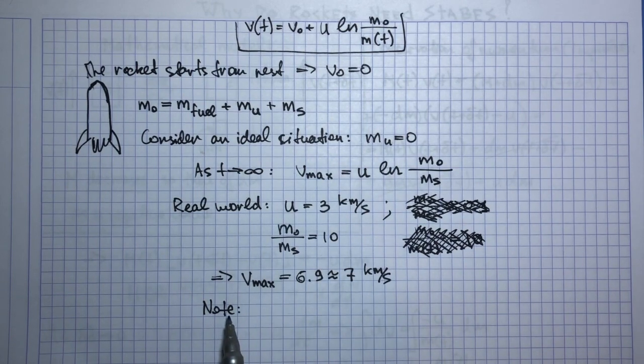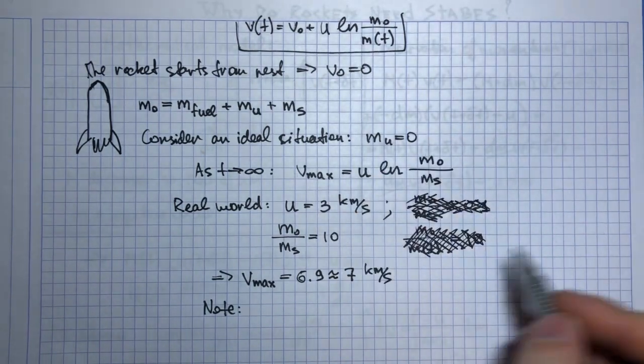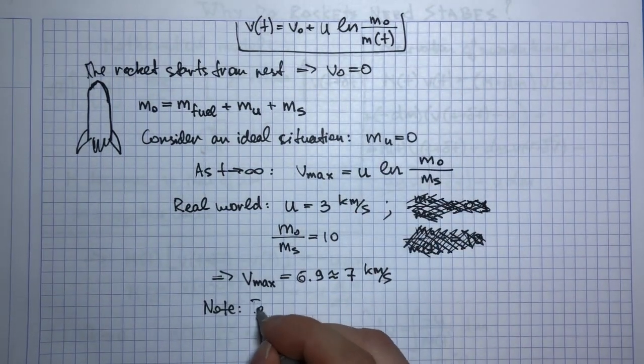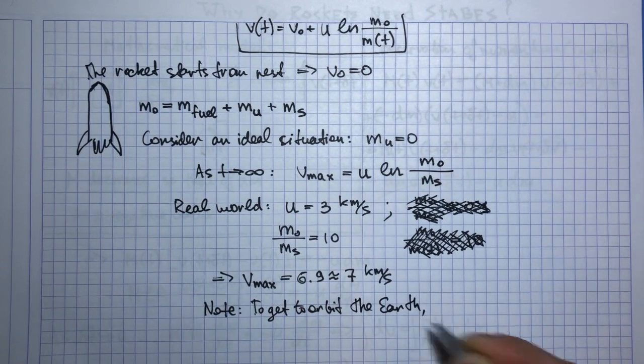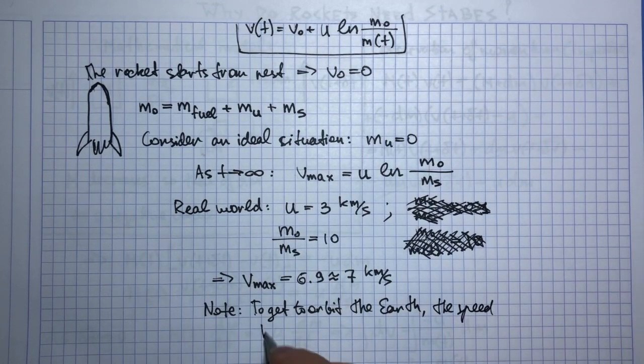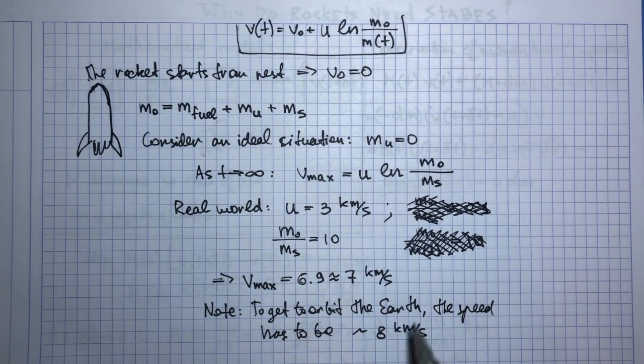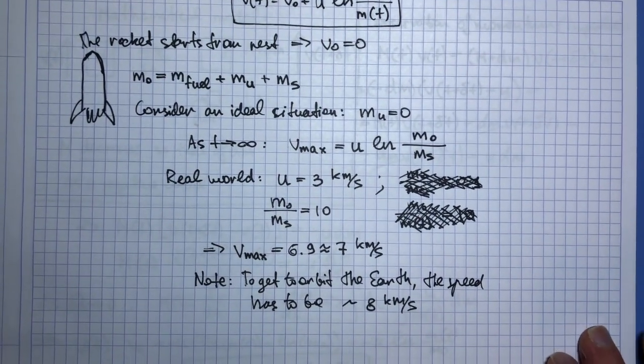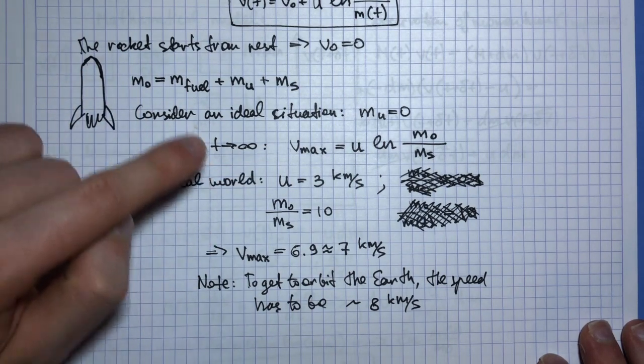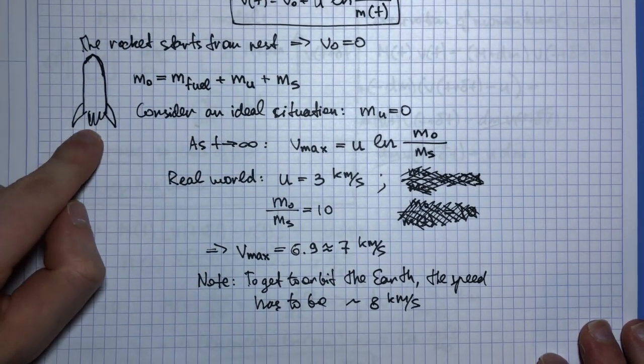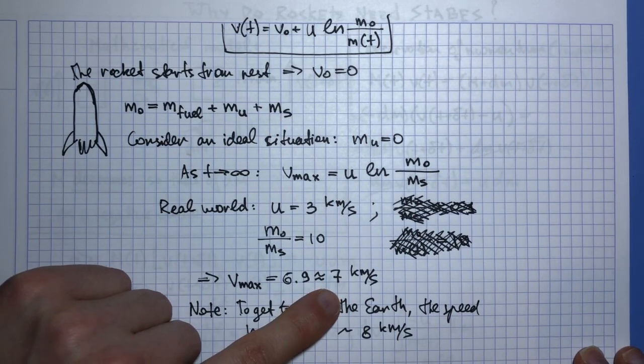But note that from physics we can actually calculate the minimal speed required to get on the earth's orbit. The speed has to be around 8 kilometers per second, and this is an easy physics exercise so make sure you can actually show this number. So what do we get? Even in our idealized situation where the rocket doesn't have any useful mass and there is no air resistance, we still cannot reach the necessary speed in order to get to the orbit.